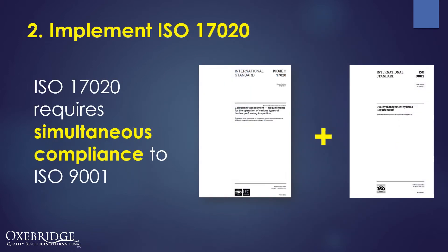Next, you're going to have to implement the requirements of ISO 17020. This can include implementing ISO 9001 alongside it, or implementing the ISO 9001 style requirements embedded in the ISO 17020 standard itself. You will be expected to simultaneously comply with the requirements of ISO 9001.